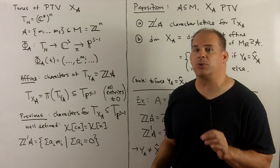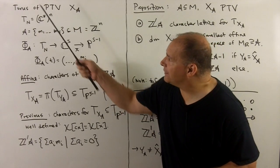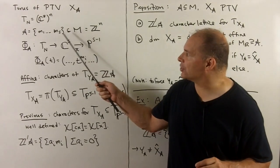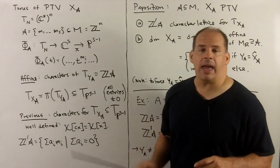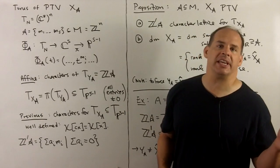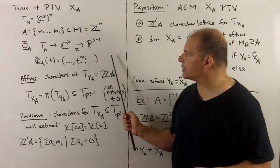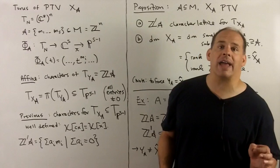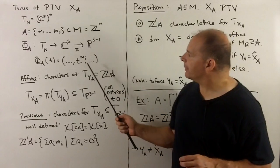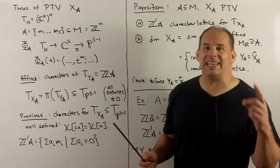Now let's consider the torus of a projective toric variety and its character lattice. We have our usual setup for X sub A: T sub N equals C-star to the N. We pick characters m1 through m_s — that's our set A — and we think of these as exponents. We have our usual phi sub A, which carries our torus into C to the s, mapping a torus element to a tuple built out of our characters. For the character lattice of the torus for Y sub A, we're just taking the Z-span of A.